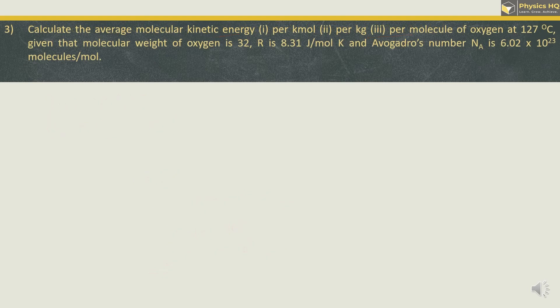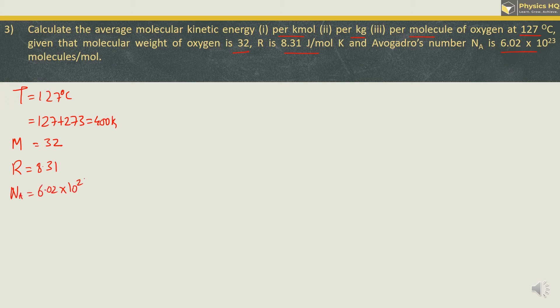Next example: Calculate the average molecular kinetic energy per kilomole, per kg, and per molecule of oxygen at 127°C. Given: molecular weight of oxygen = 32, R = 8.31 J/mol·K, Avogadro's number Nₐ = 6.02 × 10²³. Temperature 127°C converts to 400 K.